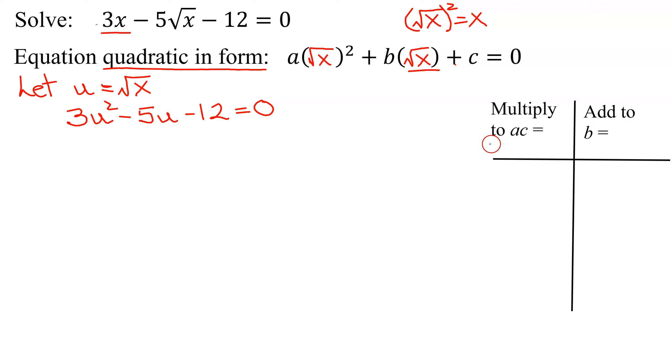So A in this case is 3, and C is negative 12. So 3 times negative 12 is negative 36. I need two numbers that multiply to negative 36 and add to B, which is negative 5. Since they multiply to a negative, the signs are opposite, and if they add to a negative, the bigger number has to be the negative.